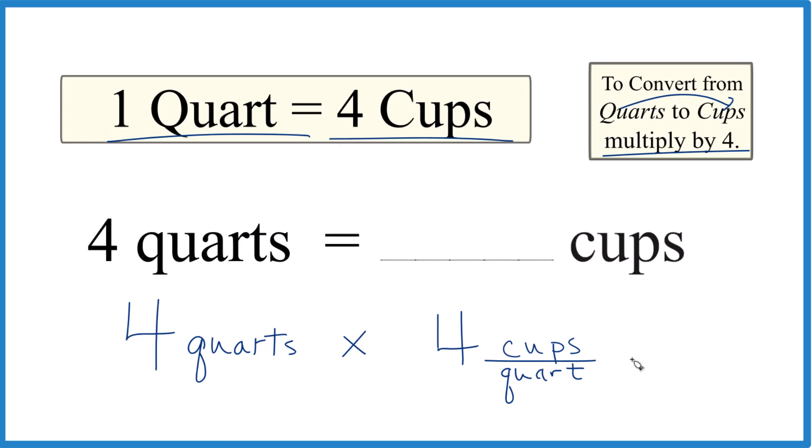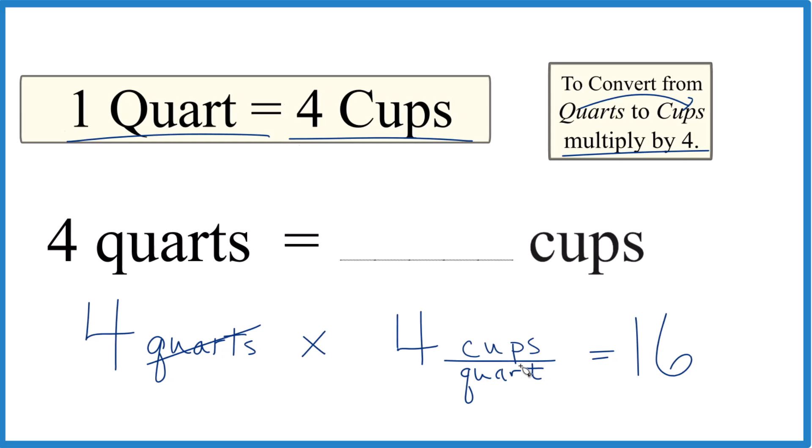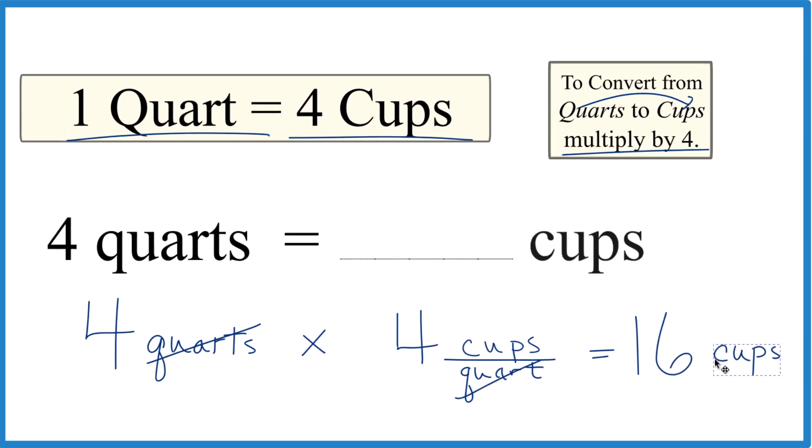So we multiply, we get four times four. That's 16, like we got before. But we have quarts on top and the bottom. That cancels out, and that leaves us with cups.